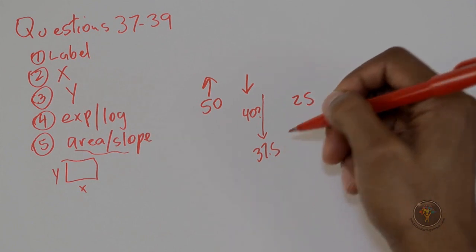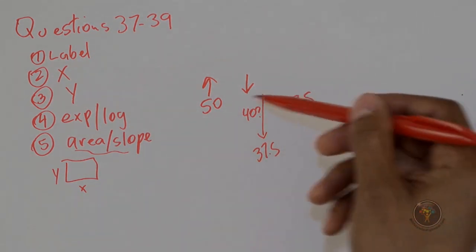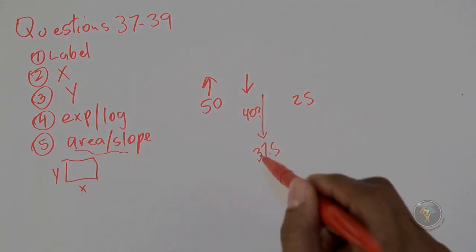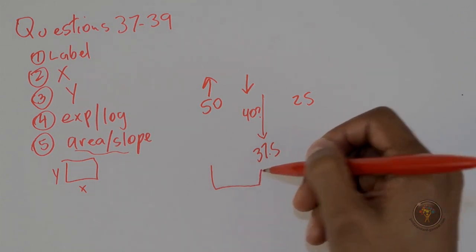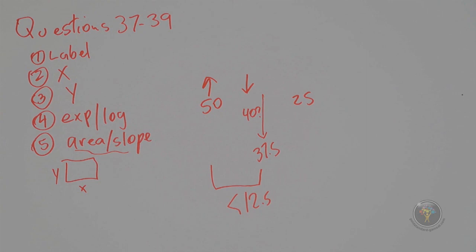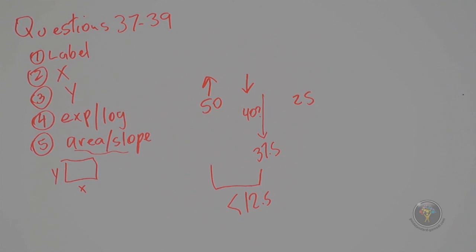The midpoint between 25 and 50 would be 37.5. The value is definitely more to the left of that midpoint, so the difference in pressure is definitely less than 12.5. Therefore, the correct answer is A, and the unit is torr. Keep in mind: one atmosphere equals 101.3 kPa, which equals 760 mmHg, which equals 760 torr. The SI unit for pressure is the pascal — one newton per meter squared.